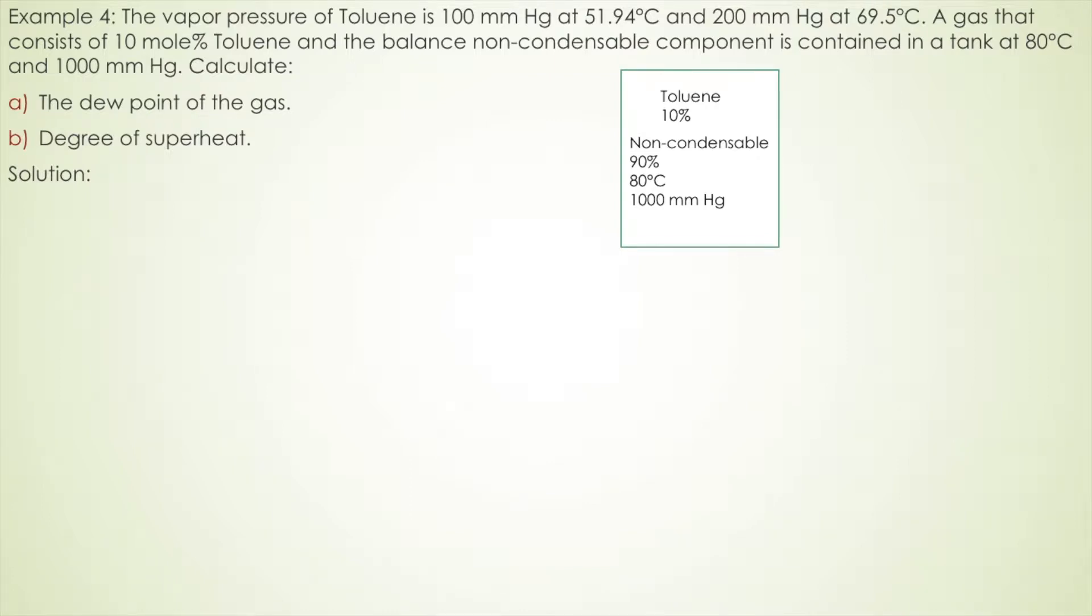Given that the vapor pressure of toluene is 100 mmHg at 51.94 degrees and 200 mmHg at 69.5 degrees, a gas that consists of 10 mole percent toluene and the balance non-condensable component is contained in a tank at 80 degrees Celsius and 1000 mmHg. Calculate the dew point of the gas and the degree of superheat.